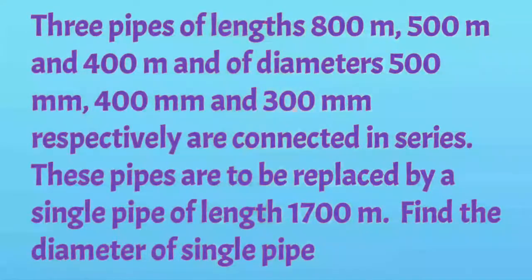First I will read the given problem. Three pipes of length 800 meters, 500 meters, and 400 meters, and of diameters 500 millimeters, 400 millimeters, and 300 millimeters respectively are connected in series. These pipes are to be replaced by a single pipe of length 1700 meters. Find the diameter of the single pipe.